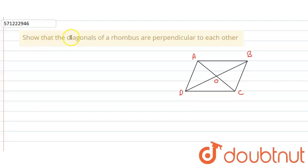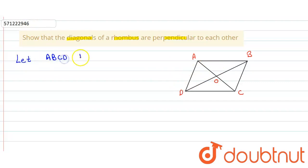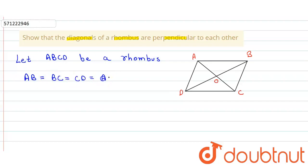In the given question, we have to prove that the diagonals of a rhombus are perpendicular to each other. First, we consider a rhombus ABCD. In a rhombus, all the sides are equal, so we can write that AB = BC = CD = AD.